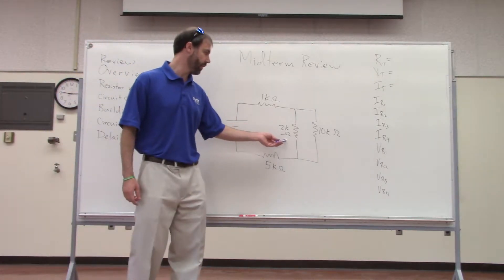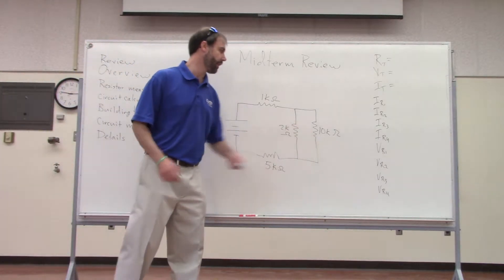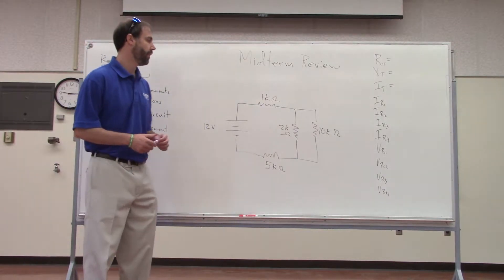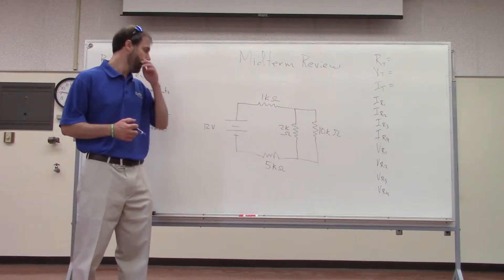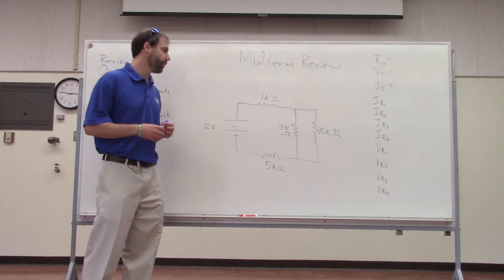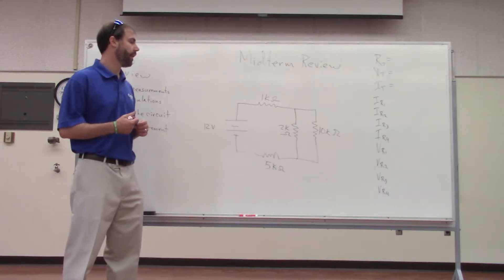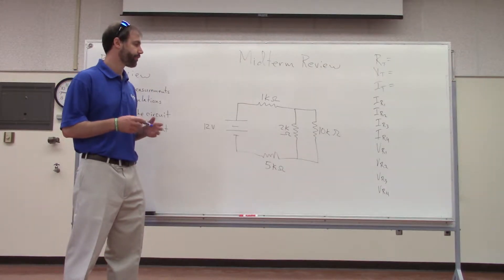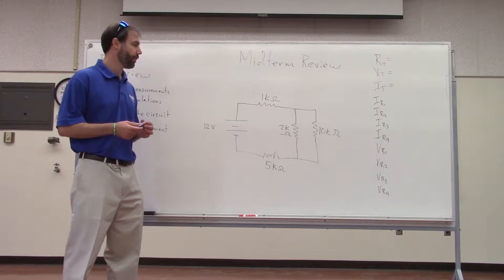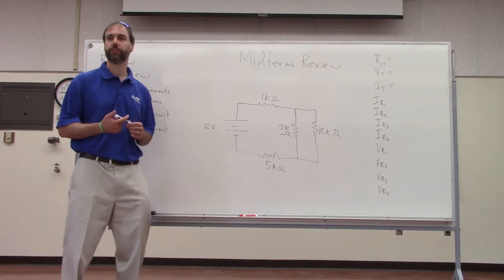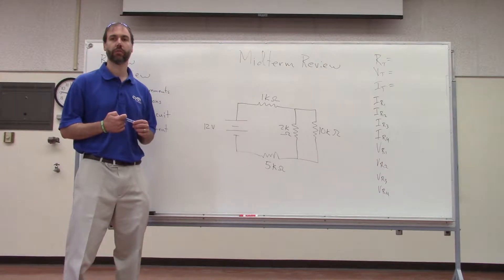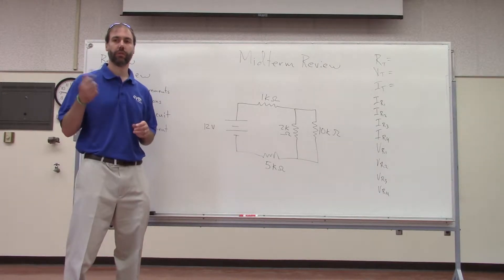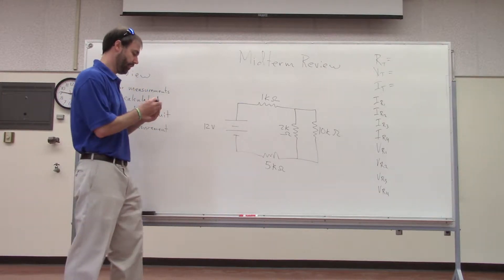The 2 kilohm and the 10 kilohm — those are in parallel — so we can simplify those. The formula we use for that simplification is 1 over R_total equals 1 over R1 plus 1 over R2.